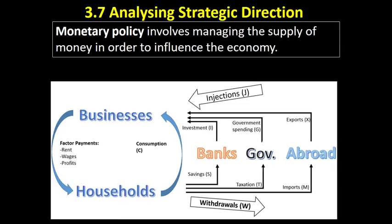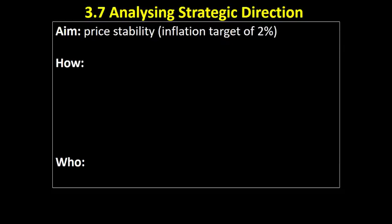Fiscal policy uses the government to influence the economy. Monetary policy involves using banks — taking money out through savings and investing it as an injection into the economy. If the economy is going too quickly, we want to get people to save money in banks. If we want more money in the economy, we look at getting people and businesses to borrow and invest more.